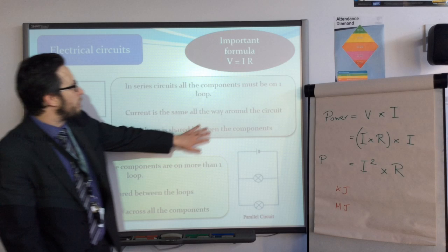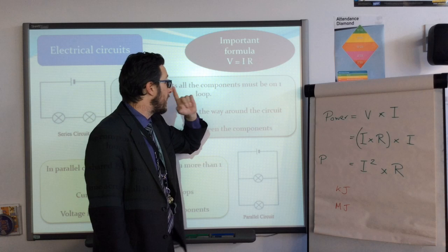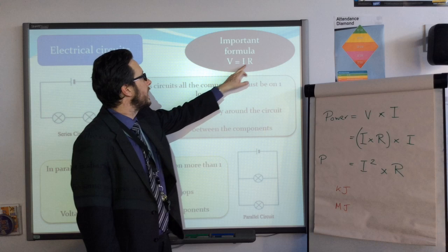This formula I've put up again is so important. If you know the current and you know the voltage going through that bulb you can work out the resistance of that bulb by rearranging this formula. They may ask you to do that. The voltage or potential difference divided by the current is equal to the resistance.